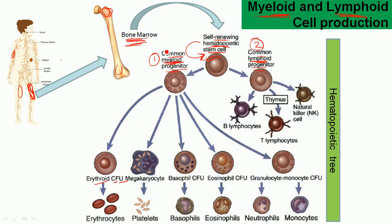'Lymphoid' means they are produced in the bone marrow but mature in other lymphoid organs like the thymus, spleen, etc. The common myeloid progenitor cell can then produce several distinct cell types.